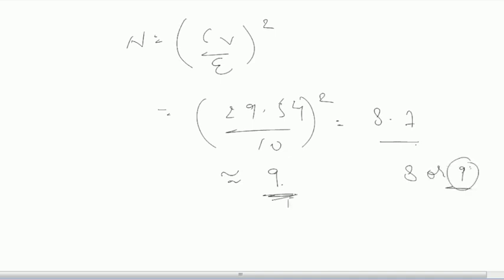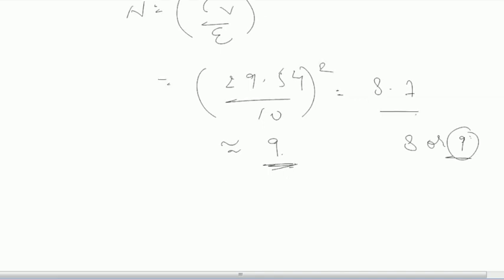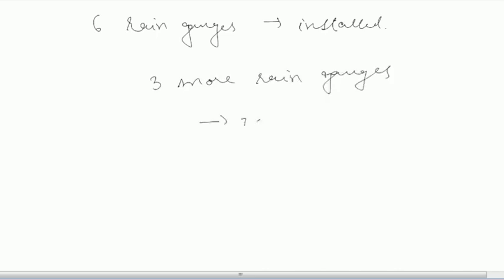Now in the question it is said that this is the total number of optimal gauges. So since 6 rain gauges are already installed, you need to install 3 more rain gauges in order to have 10 percent error in estimation. Thank you.